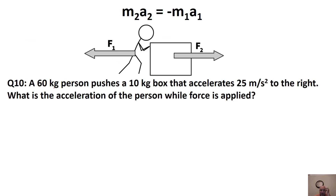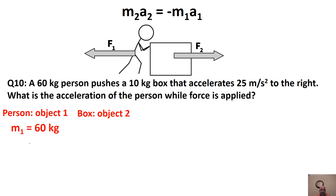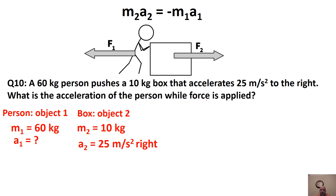Here's an example: a 60-kilogram person pushes a 10-kilogram box, and the box accelerates at 25 meters per second squared to the right. What's the acceleration of the person while the force is applied? Keeping them separate — mass of person = 60, we're solving for their acceleration; mass of box = 10, acceleration of box = 25 m/s² to the right (positive).